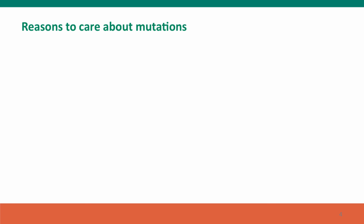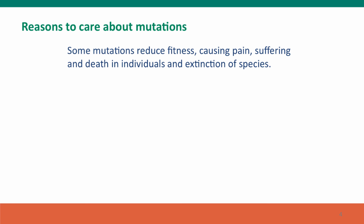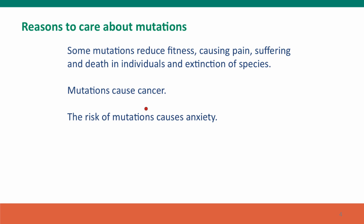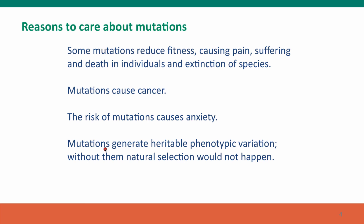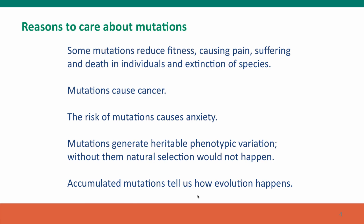There are lots of reasons to care about mutations. Mutations reduce fitness — they cause harm to individuals and they cause extinction of species. They cause cancer; we'll talk a lot about cancer and how mutations are its cause in Module 4. On the other hand, in an evolutionary framework, mutations generate the heritable variation that's the raw material of evolution. If we didn't have mutations, there'd be no natural selection and evolution wouldn't have happened. Finally, accumulated mutations tell us how evolution happens — they provide a kind of historical record, and we'll talk about this in a later lecture.